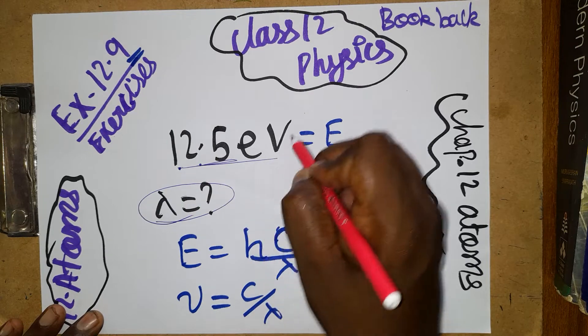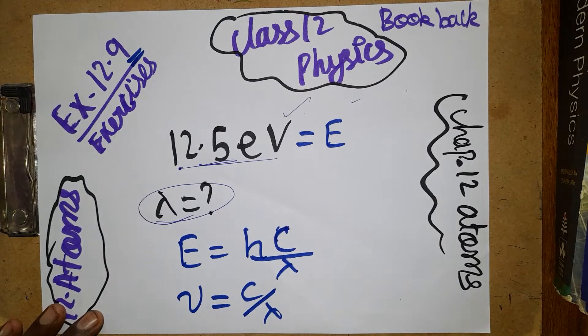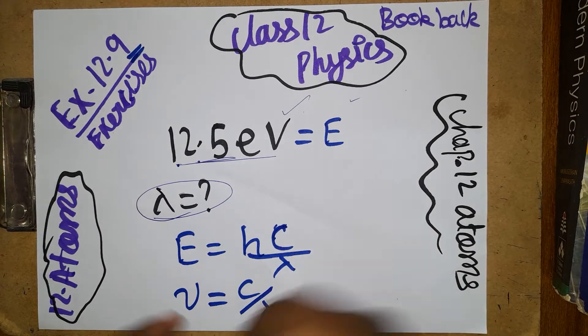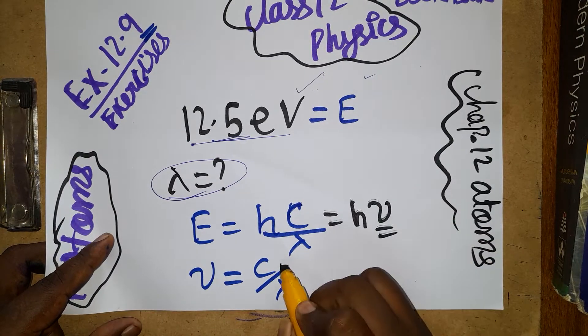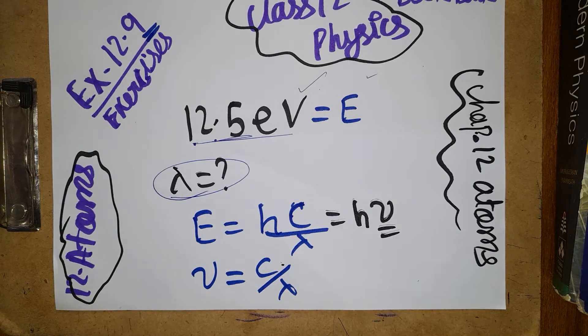EV means it is called the energy. Wavelength is the question mark. E is equal to h frequency, which is equal to hc divided by lambda. The next step involves rearranging this formula.